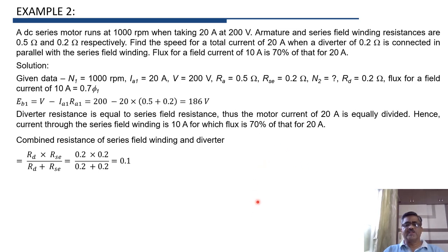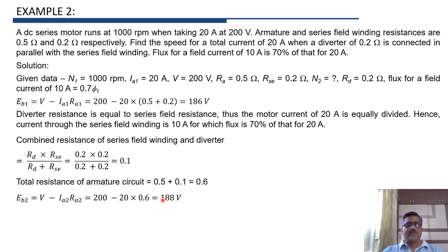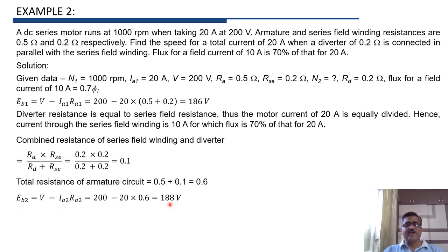This 0.1 ohm combination is connected in series with the armature resistance of 0.5 ohm, giving a total armature circuit resistance Ra2 equals 0.5 plus 0.1 equals 0.6 ohm. Now Eb2 equals V minus Ia2 into Ra2 equals 200 minus 20 into 0.6, giving Eb2 equals 188 volt. So the back EMF changes from 186 volt to 188 volt.